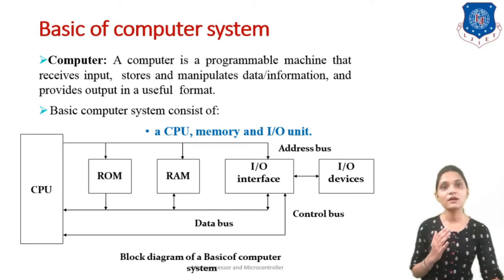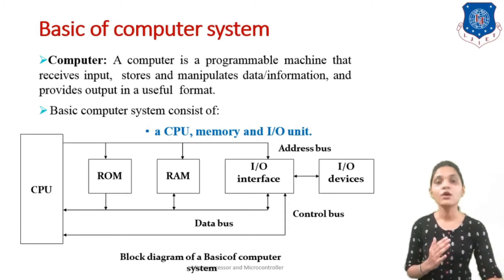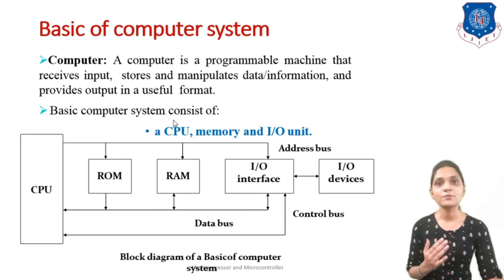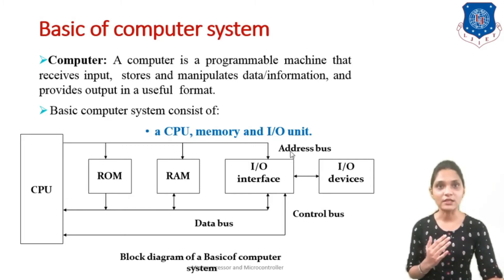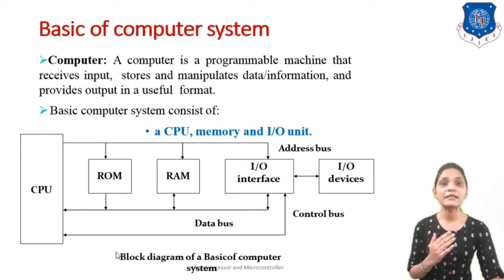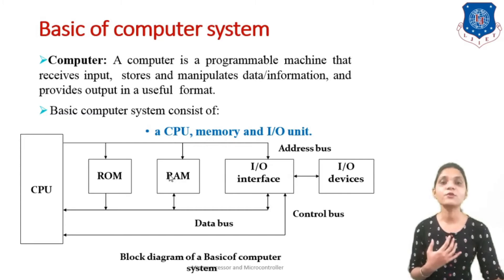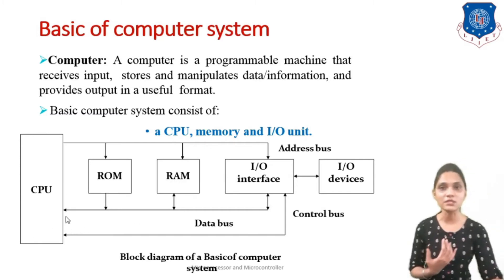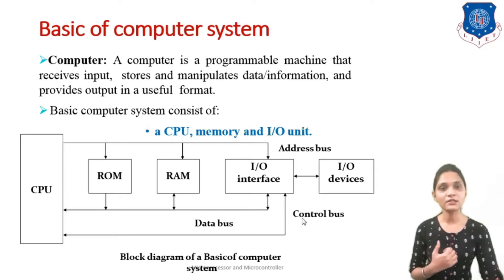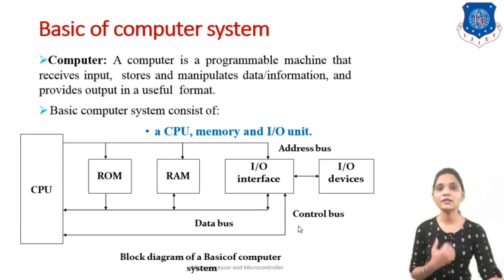The address bus carries the address of the location — either memory or an I/O device — and is provided by the CPU. Address buses are unidirectional. The data bus is used to transmit data, which can be transferred from CPU to I/O or memory, or from memory to the CPU or I/O to the CPU, so the data bus is bidirectional. Another bus provides control signals, and that is your control bus.